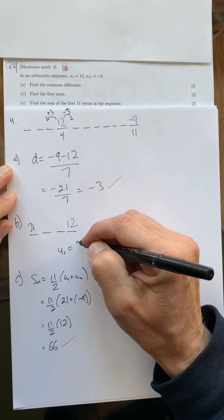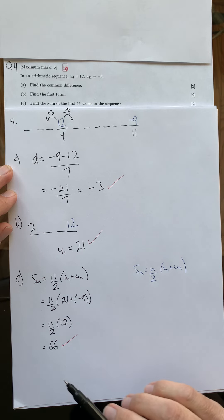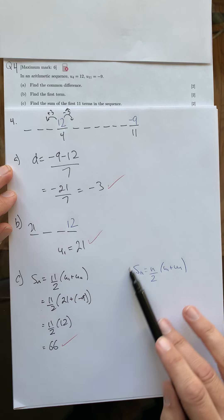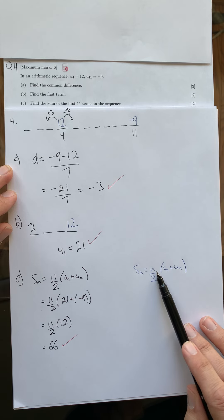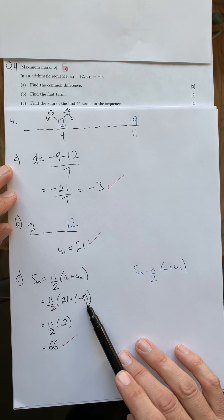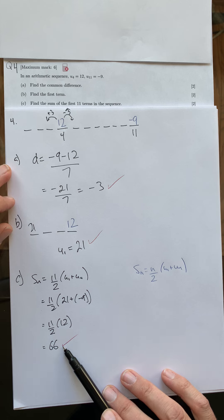So my first term would be 21. We can just kind of figure that out through our understanding, which is okay. Now part c is asking for the sum of the first 11 terms, so I jump over to my sum formula. n is 11, I have my first term and my 11th term. It becomes 12 divided by 2, which is 6, times 11, which is 66.